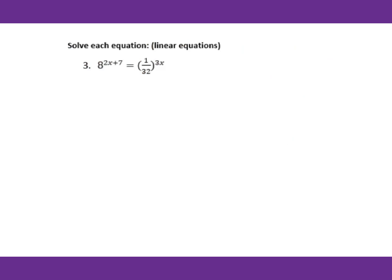Let's go to some examples. For number 3, first analyze the base — you have 8 and 32. We can make the base 2, because 2 to the 3rd power equals 8 and 2 to the 5th power equals 32. Therefore, you get 2 to the 3rd power is 8. Then we have 2x plus 7 equals 1 over 32, which is 2 to the negative 5th power.